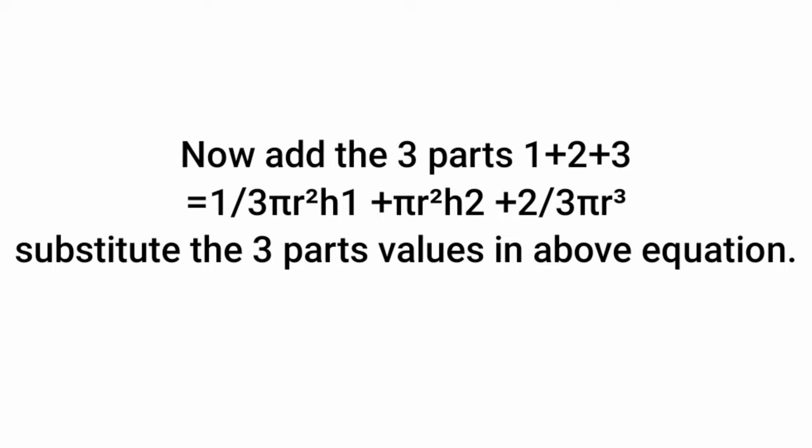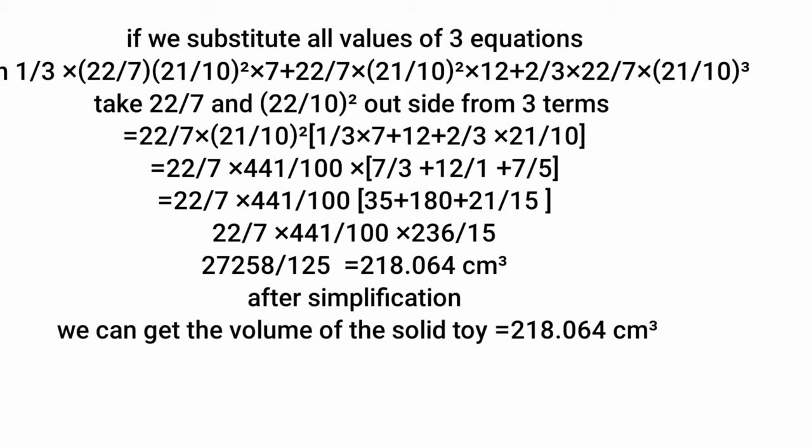Substituting all values into the combined equation: 1/3 × 22/7 × (21/10)² × 7, plus 22/7 × (21/10)² × 12, plus 2/3 × 22/7 × (21/10)³. Taking 22/7 and (21/10)² as common factors and simplifying, we get the volume of the solid toy equals 218.064 cm³.